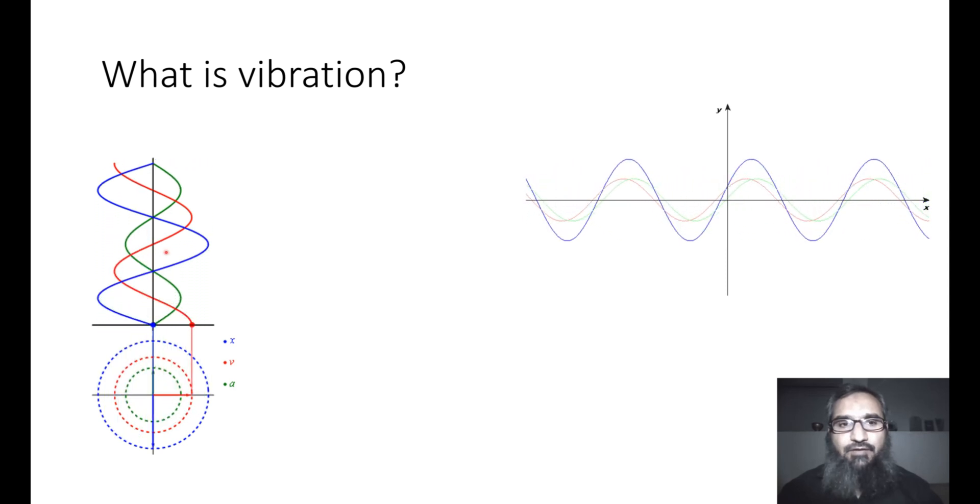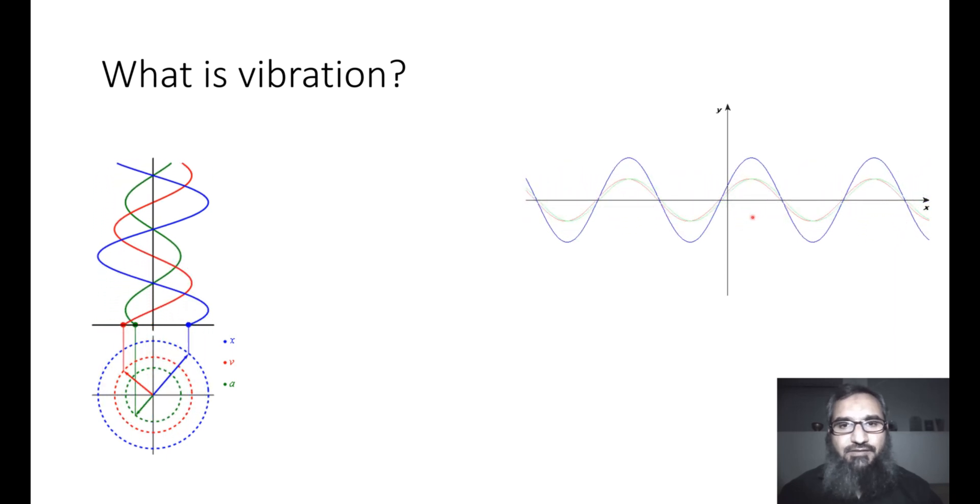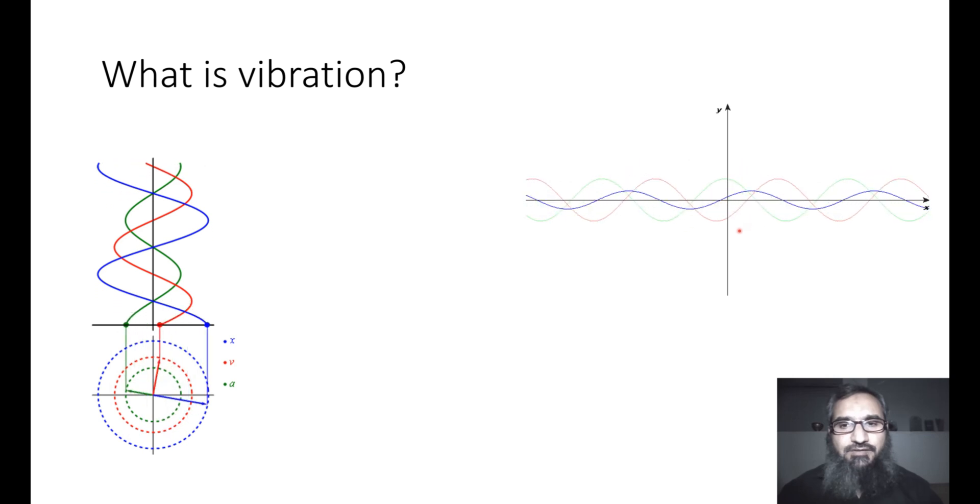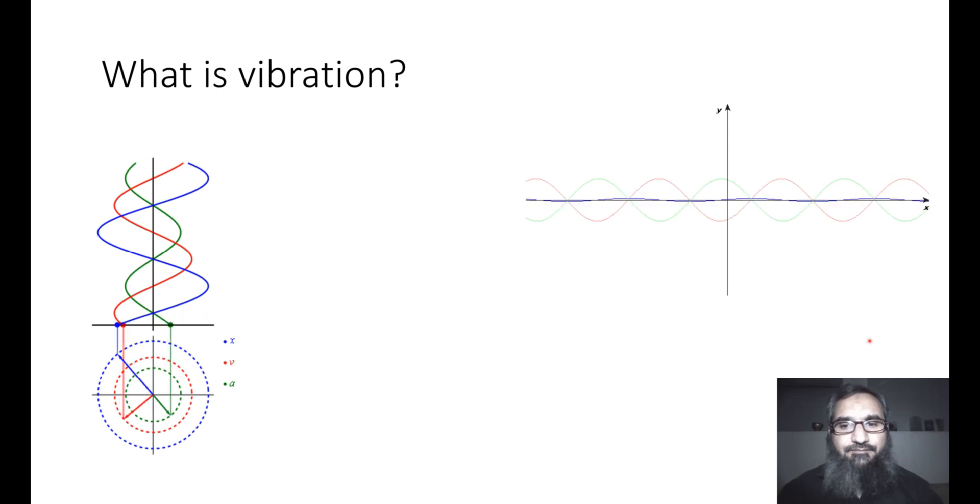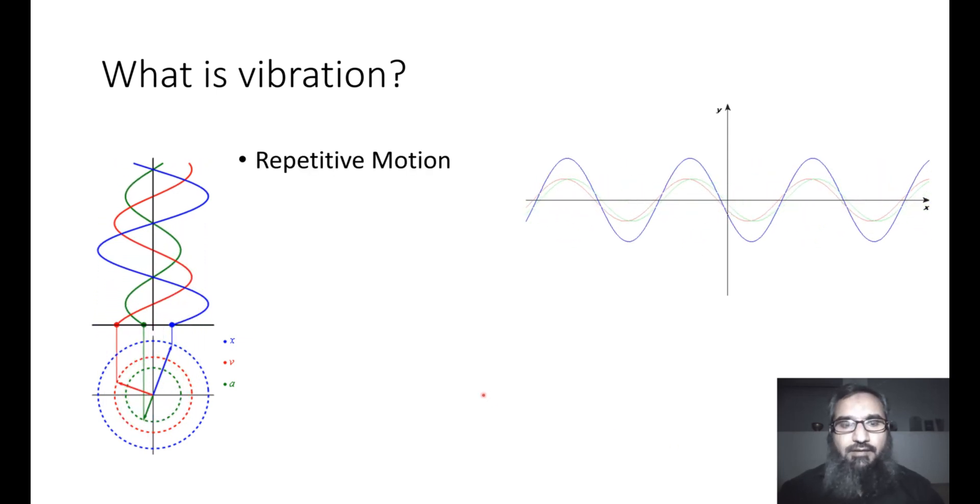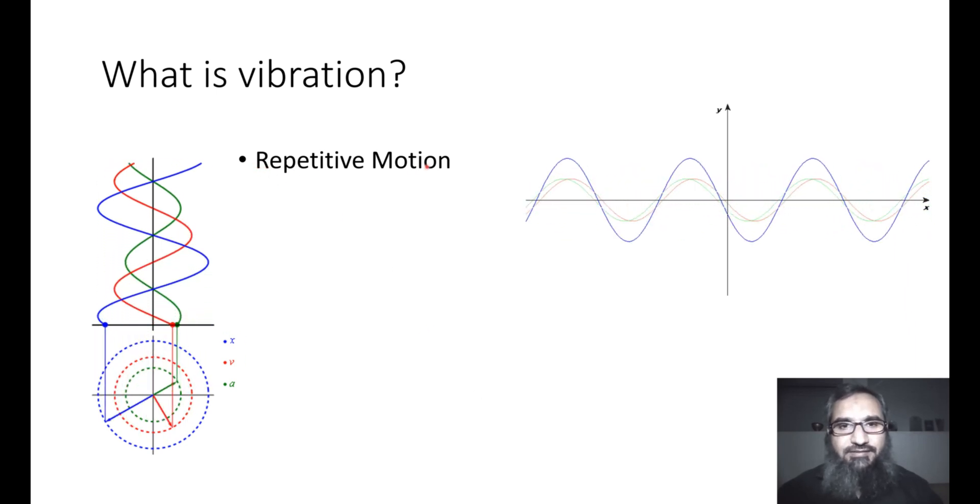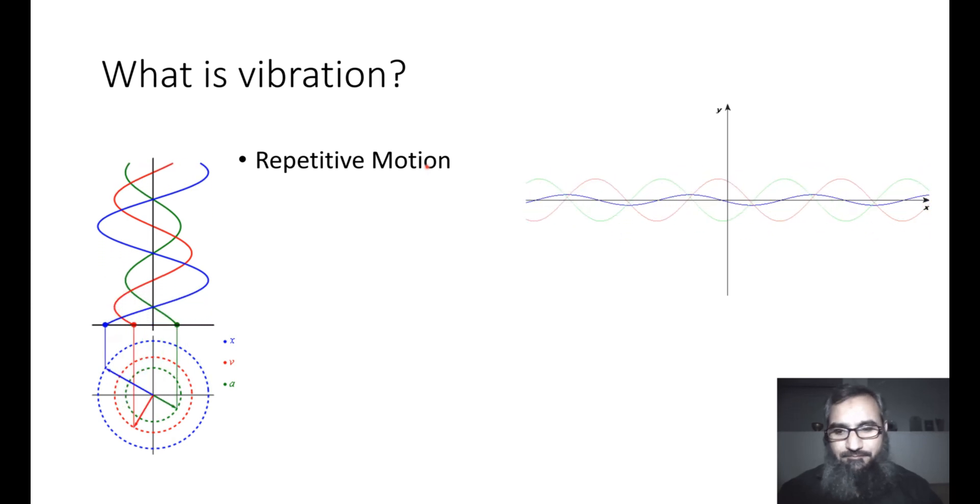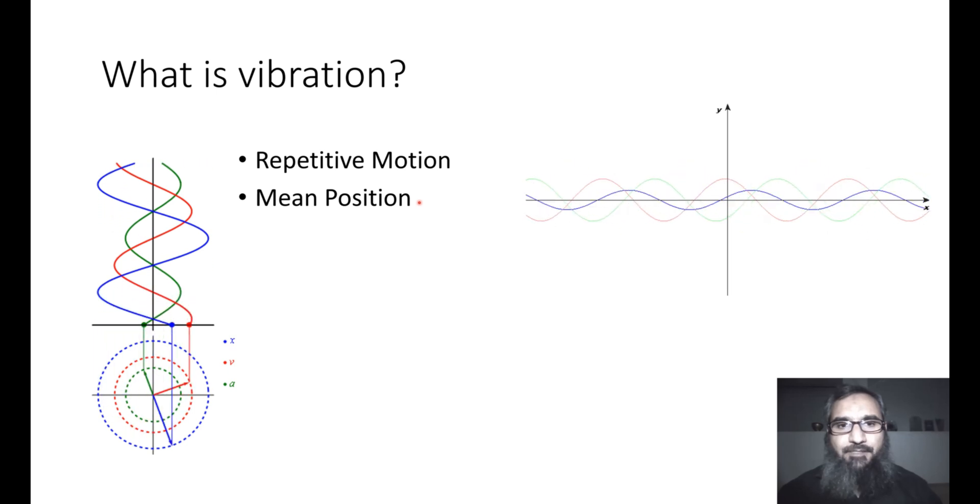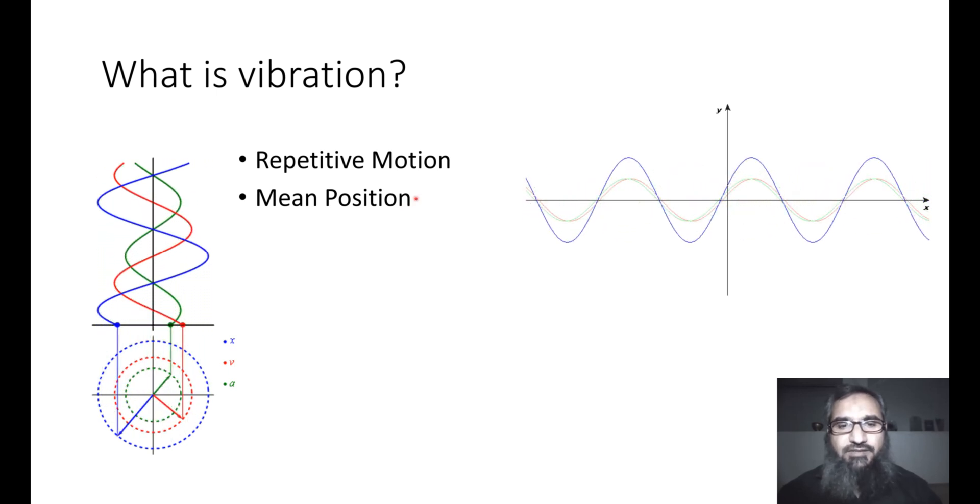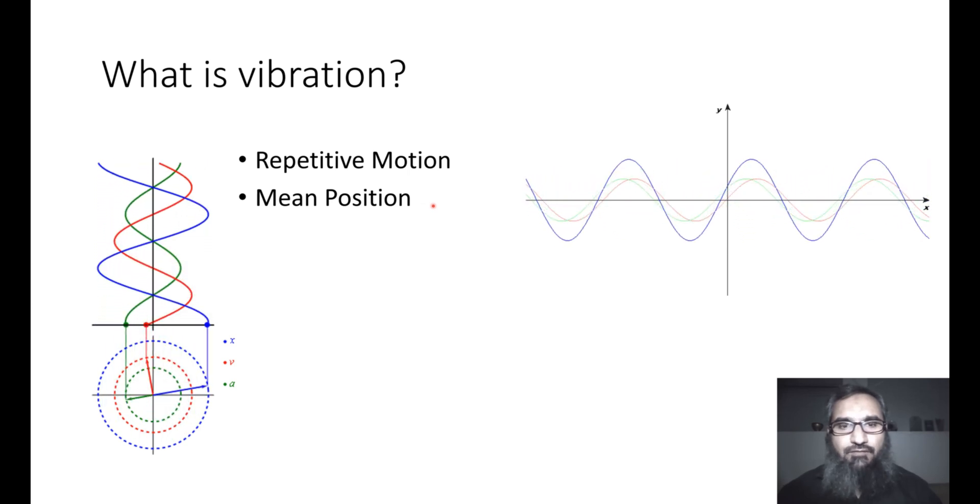Every repetitive to and fro motion is known as vibration, which precisely should have two things in it. The first thing is the motion should be repetitive, so it will repeat itself after a certain time. And secondly, this motion should be around a mean position, which is most of the time the equilibrium position of that system.